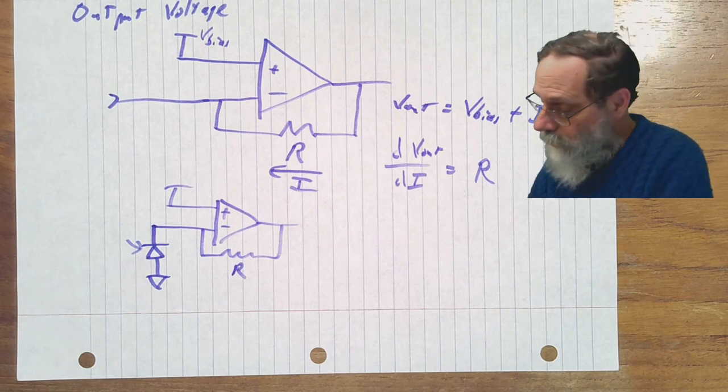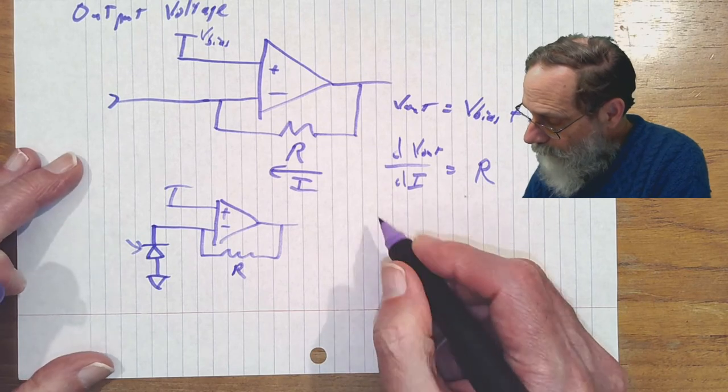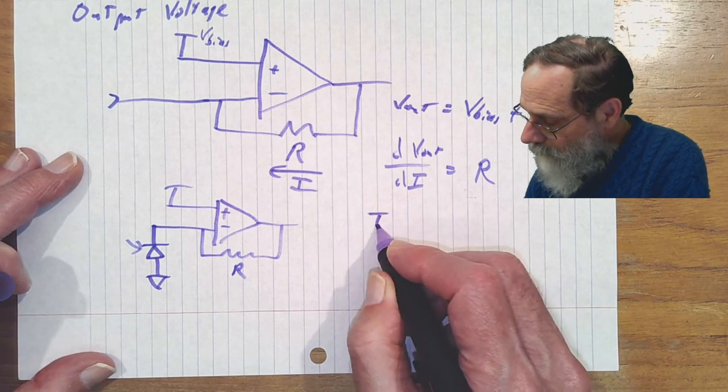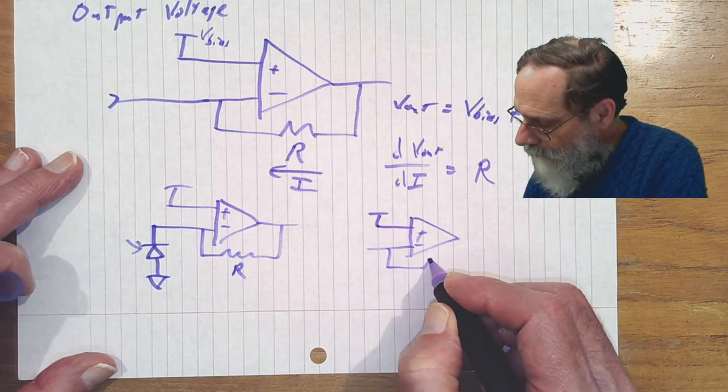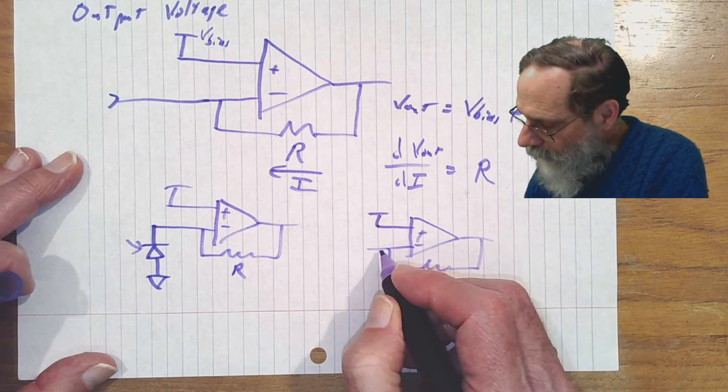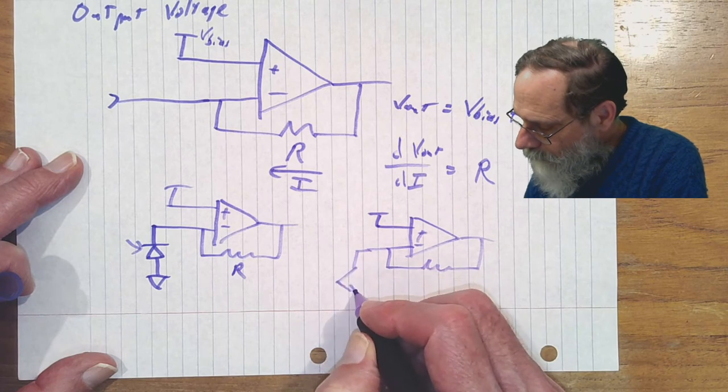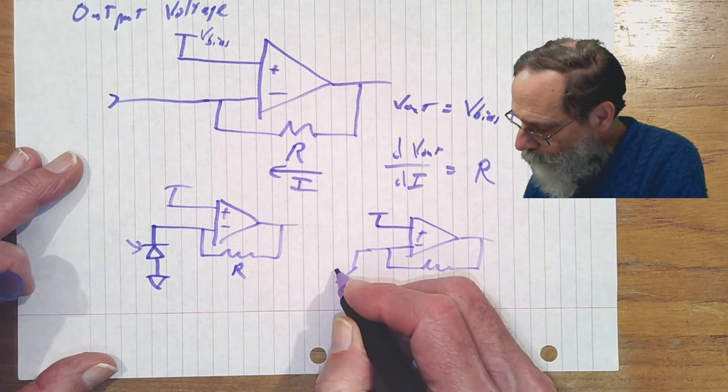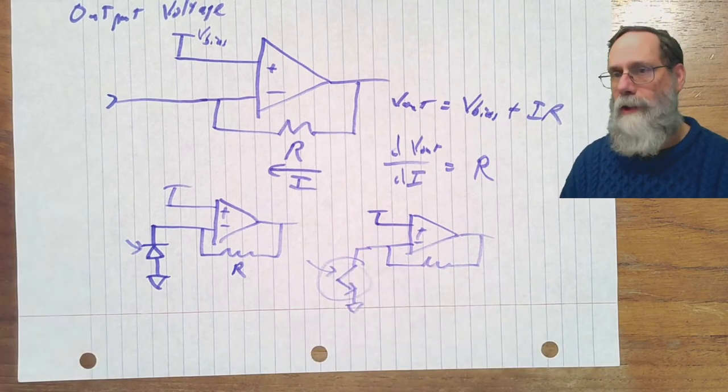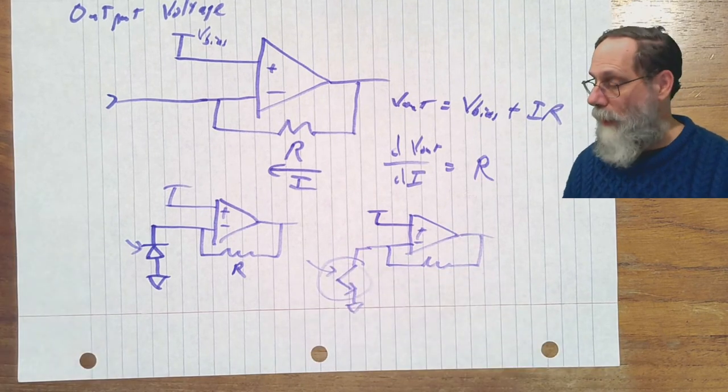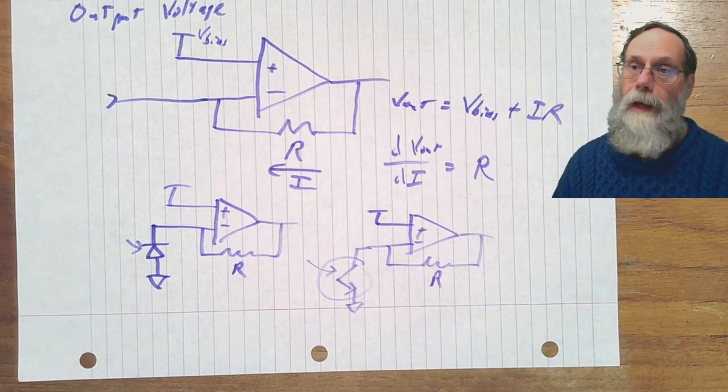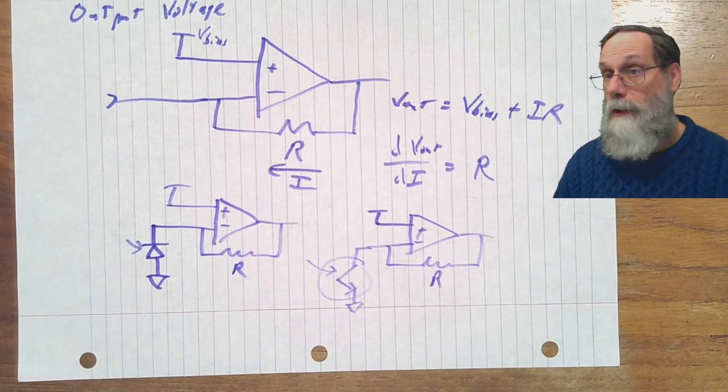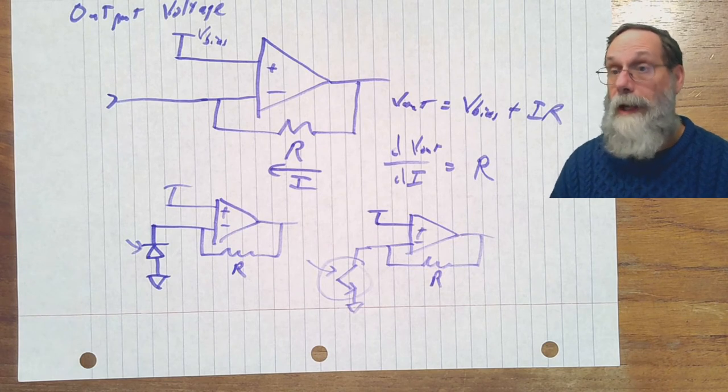We can do the same thing with phototransistors. We can have our bias voltage, our transimpedance amplifier, and a phototransistor. For this we'll have, again, a gain of R. And because the phototransistor has much larger currents than a photodiode, we may not need to get as much gain out of our transimpedance amplifier.